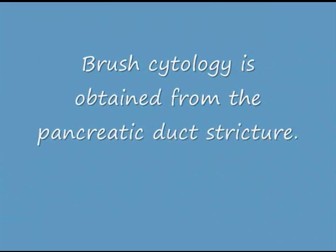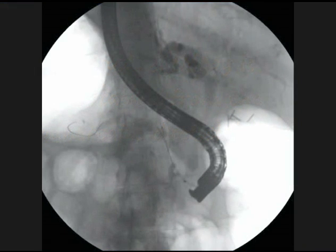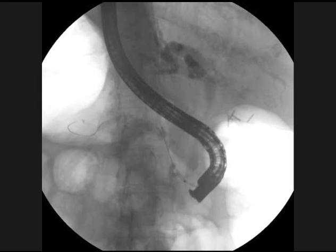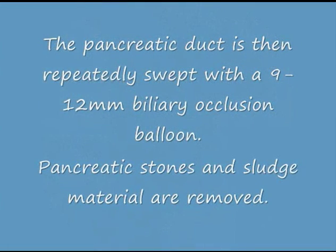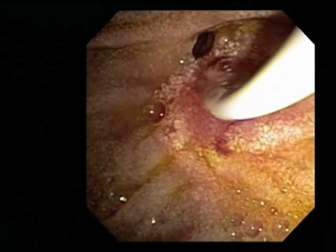Brush cytology is obtained from the pancreatic duct stricture using a biliary brush. The pancreatic duct is then repeatedly swept with a 9–12 millimeter biliary occlusion balloon, removing significant pancreatic stones and sludge.